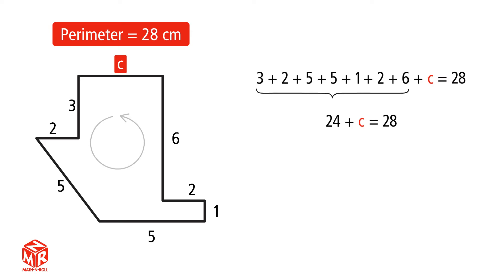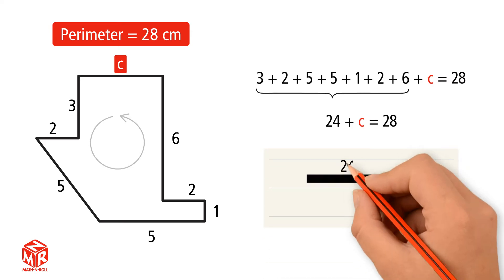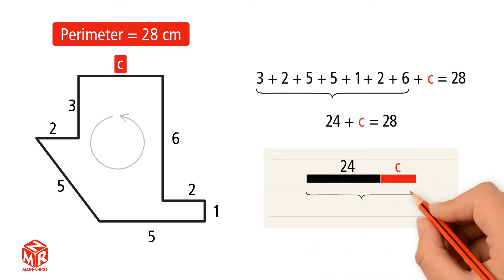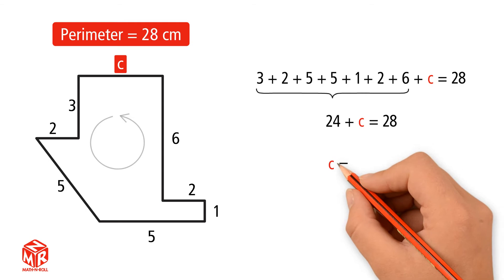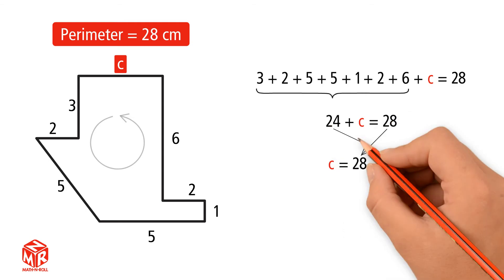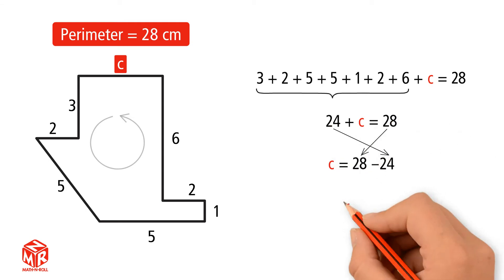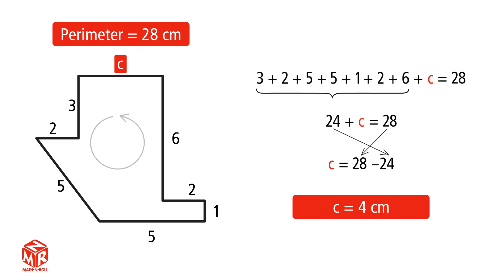How do we find C? Take a look at the model. To find C, we take away 24 from 28. So C equals 28 minus 24. C equals 4. So the unknown side length is 4 centimeters.